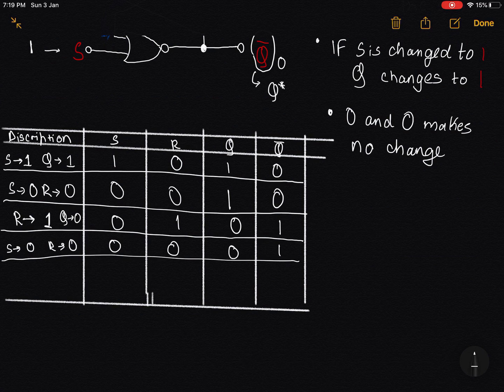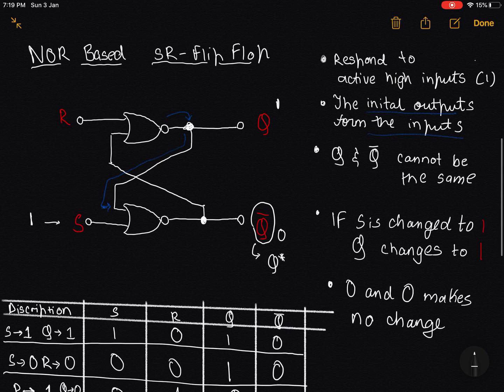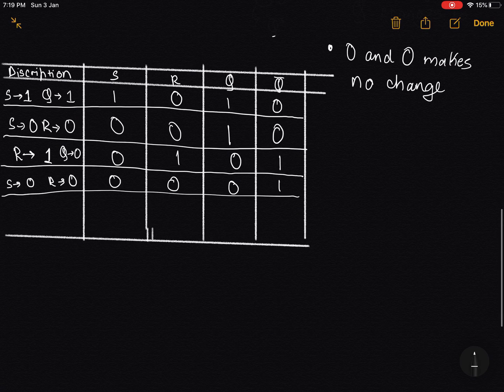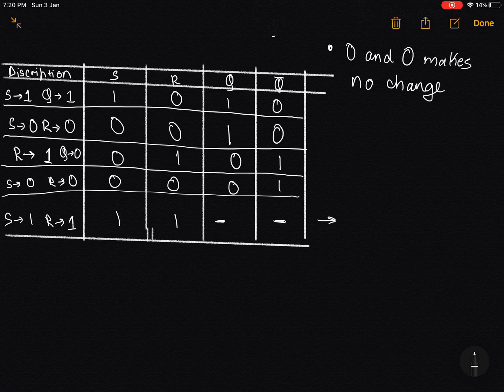Now there is a special case over here, I would say an invalid state. In S and R flip-flops, both S and R cannot be 1 together. If they both are 1 and 1, they should not be allowed because it's an invalid output, it gives you an invalid output. Because Q and Q complement cannot have the same values. So the flip-flop becomes unstable.